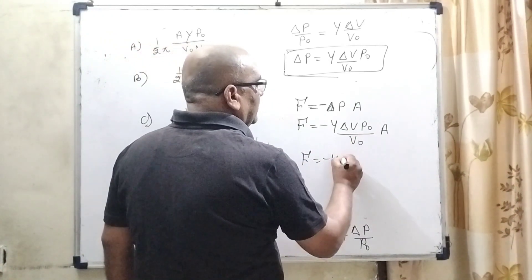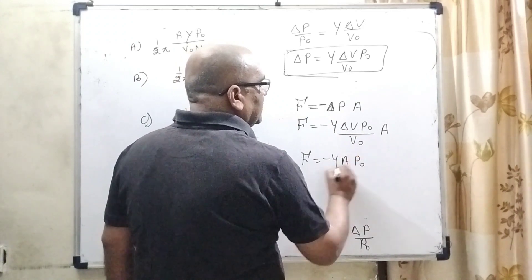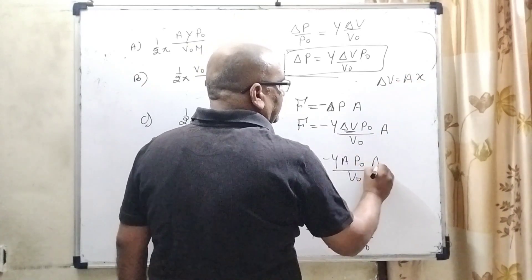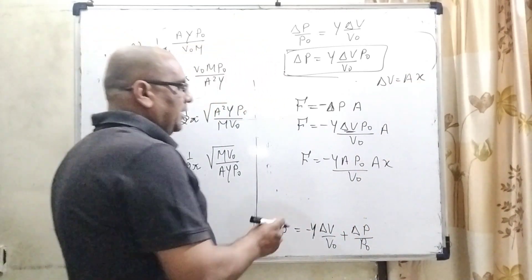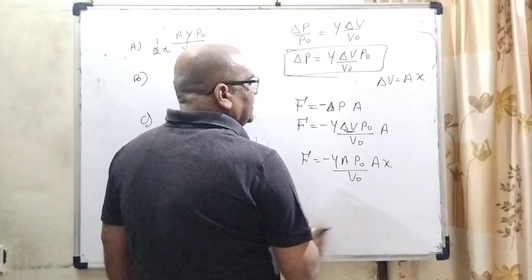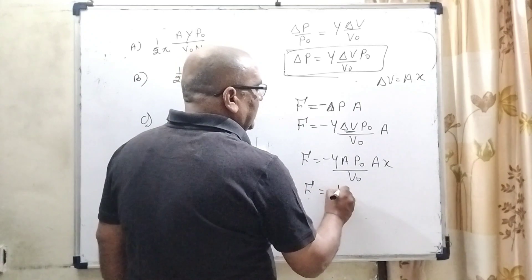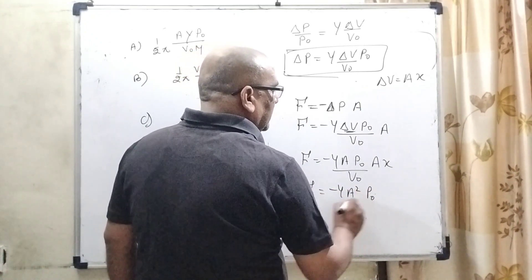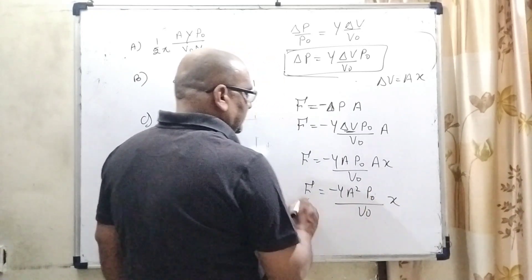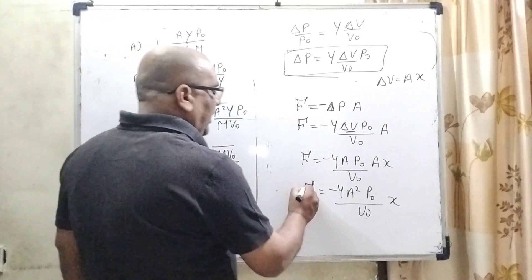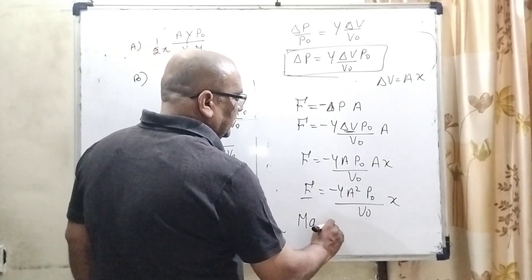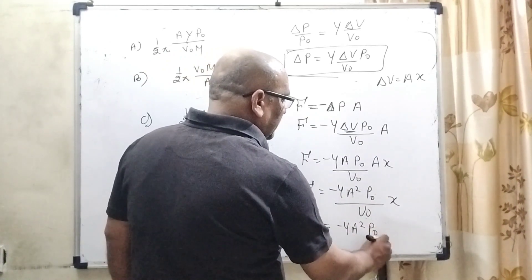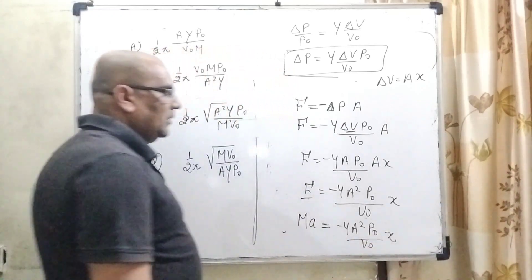So the restoring force becomes F = −γ·A²·P0/V0·x. Since F = m·a, we can write: m·a = −γ·A²·P0/V0·x, and therefore acceleration a = −(γ·A²·P0)/(m·V0)·x.